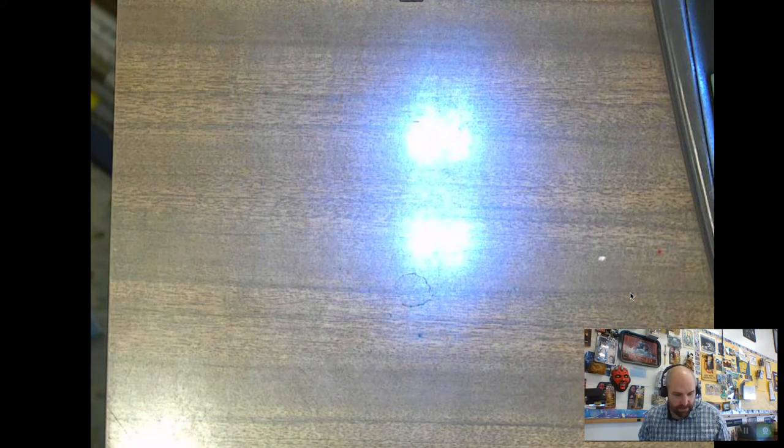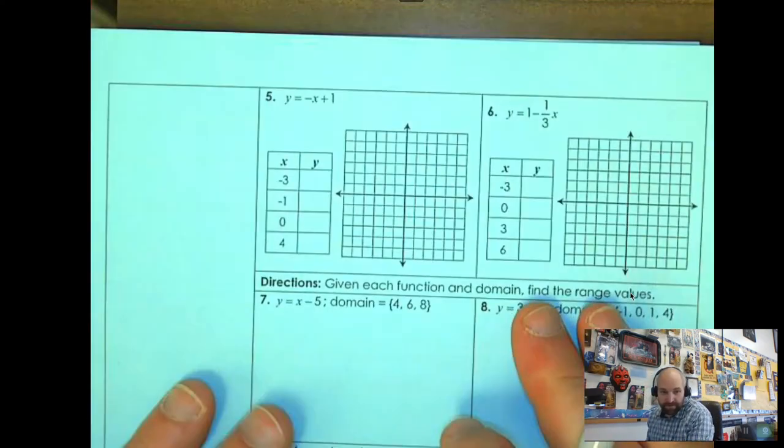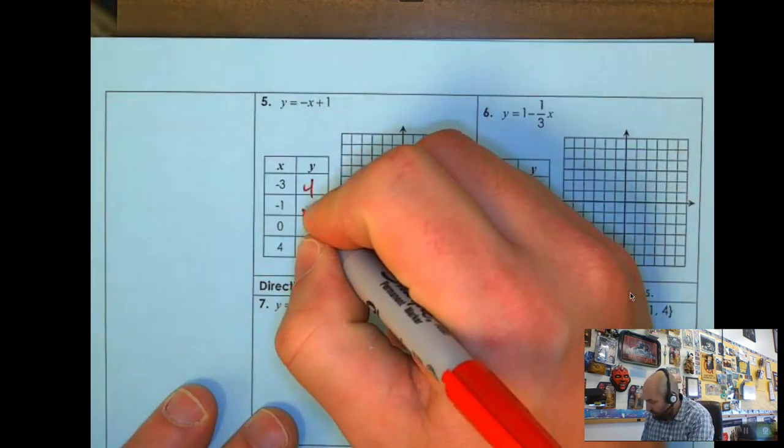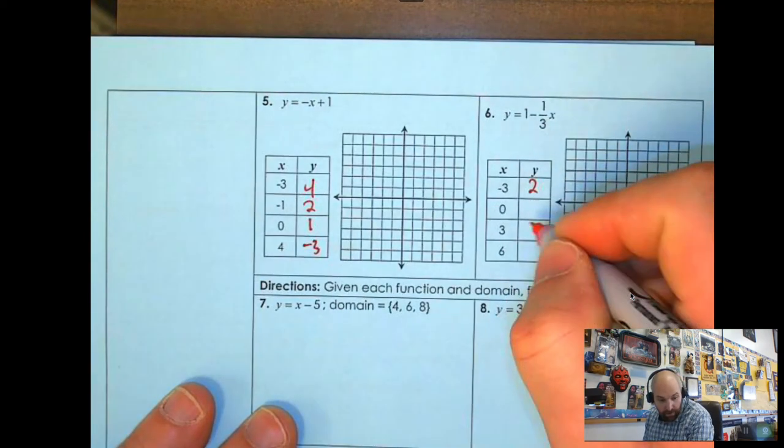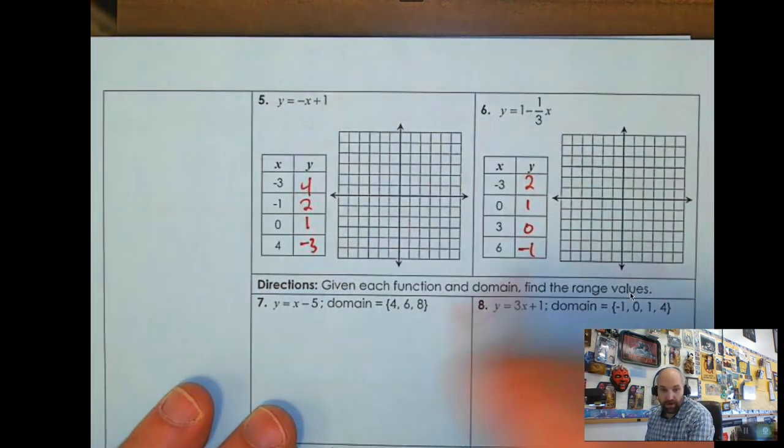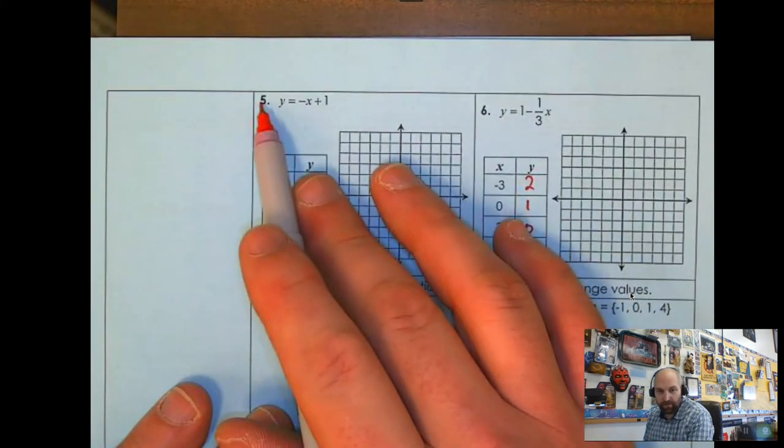So that makes sense. Why don't you go ahead and pause the video, do number 5 and number 6. And then I'll see you back here in just a minute. So you're probably wondering what's going on with the answers for number 5 and 6. So I'm going to just give them to you. So this guy's going to be 4, 2, 1, and negative 3. And then you got 2, 1, 0, negative 1. Hopefully you used your calculator. And then you can go ahead and plot these. But they should look, these all look like the same rule, the linear rule.